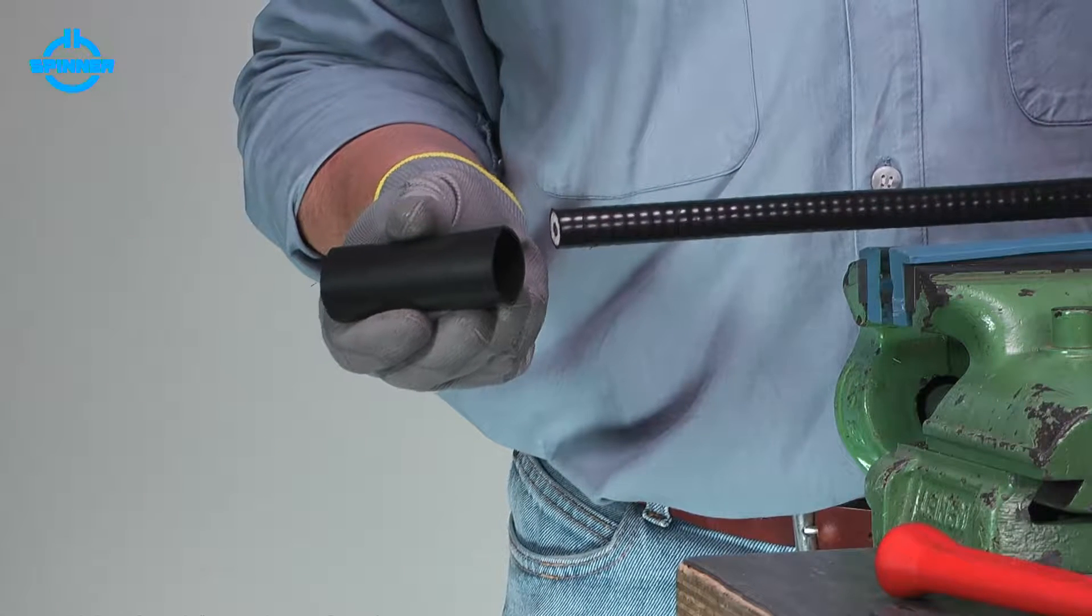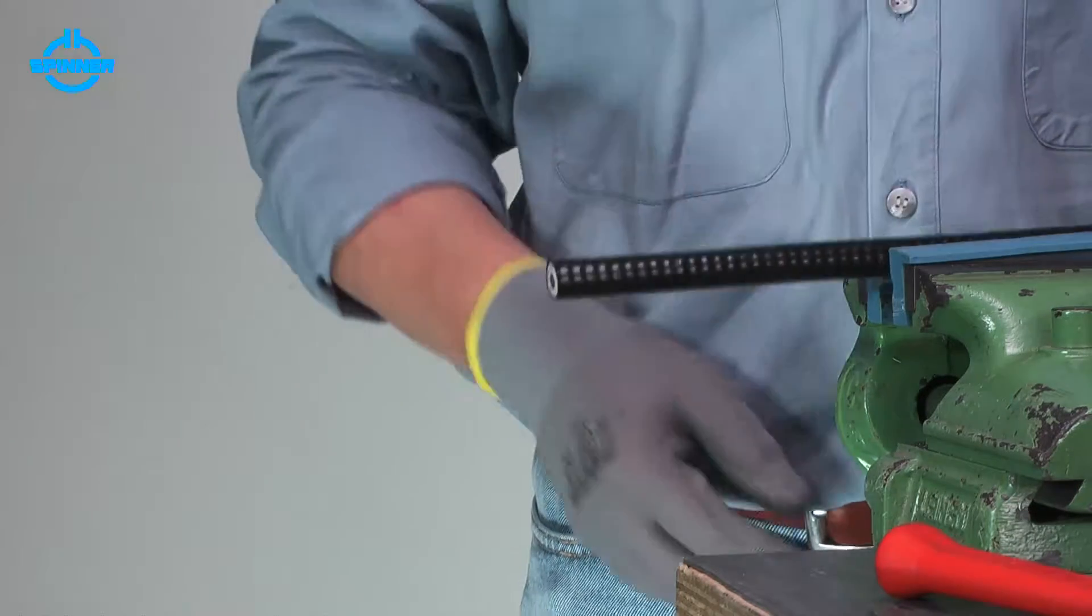Before installing the connector, slide the heat shrink tube onto the cable.